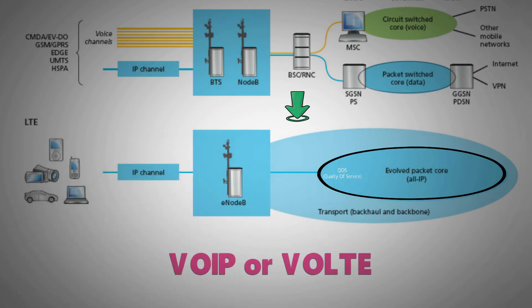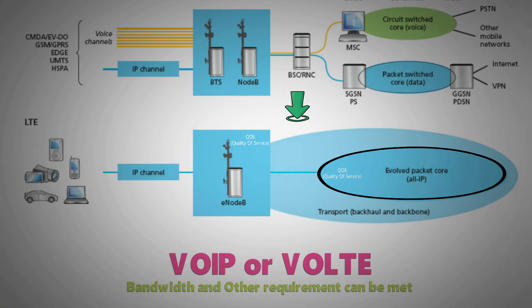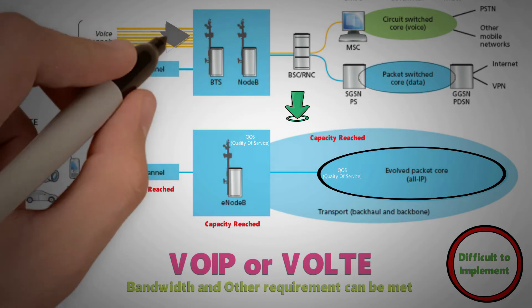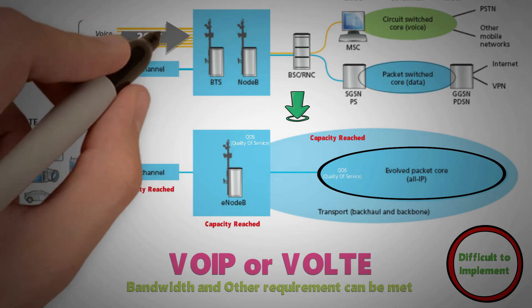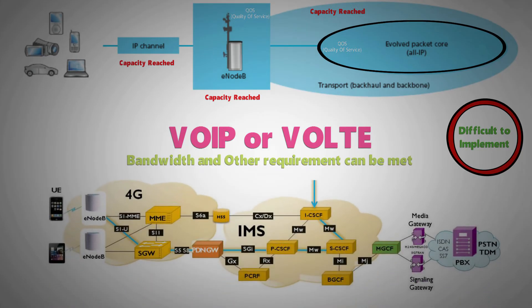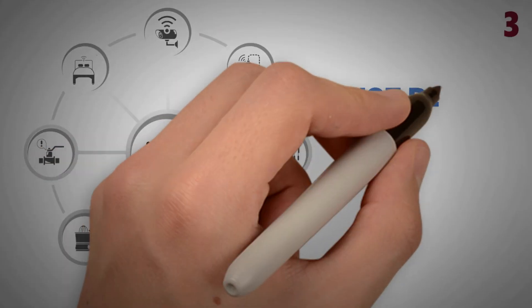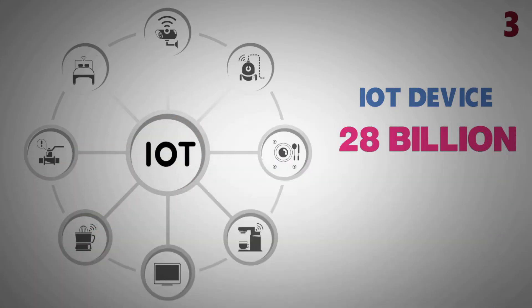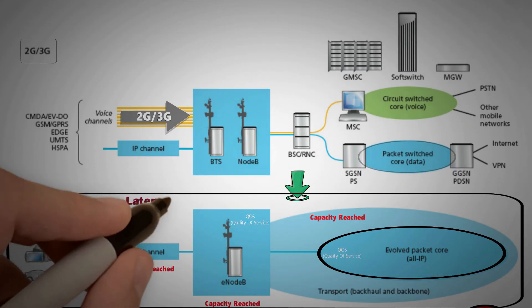Quality of service mechanisms on all interfaces ensure that bandwidth and other requirements of voice calls can be met even when capacity limits are reached. It is difficult to implement, which is why operators use circuit-switched fallback to 2G or 3G for voice calls. However, operators are migrating to Voice over LTE as it is cheaper and more versatile. With the advent of IoT devices, the total number of connected devices is expected to reach 28 billion by 2021, and for these devices, latency is more important than bandwidth.